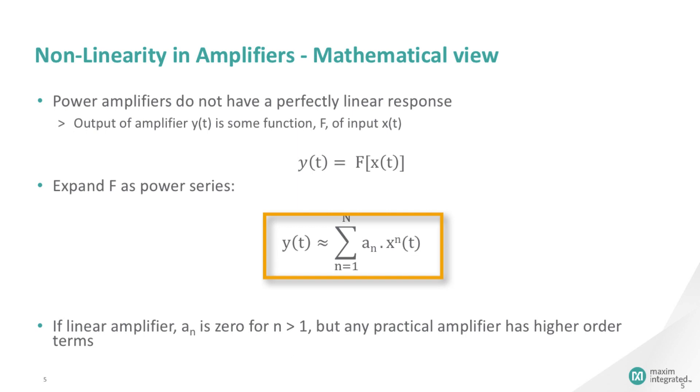When the device or amplifier is perfectly linear, all the a sub n terms other than the n equals 1 are zero, so y(t) is proportional to x(t). Non-linearity will be a measure of the presence and intensity of all the a sub n terms where n is different than 1.